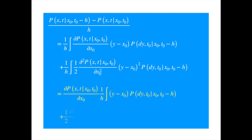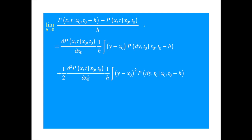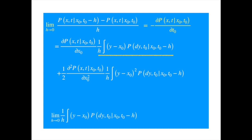We can do the same to the second integral. Now remember we need to take the limit. The left-hand side becomes the negative of the derivative with respect to t₀. We get the negative sign because in the numerator we are using minus h, so the finite approximation formula has minus h in the denominator as well. Taking the limit of the first integral on the right-hand side, we see that y minus x₀ is just displacement over a small interval, weighted by probability and scaled by time h — so it is average displacement per unit time, which is how one defines the drift. The second term by the same logic is the average of displacement squared per unit time, which is how one defines variance of displacements.